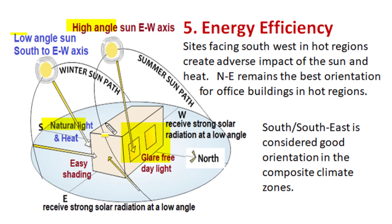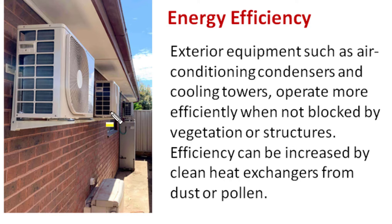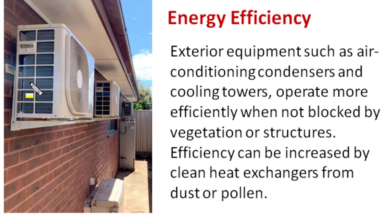A site facing south or west in a hot region creates an adverse impact of sun heat. So in a hot region, building orientation in the northeast direction is preferred. South or southeast orientation is considered good for a composite climate zone. Both east and west faces receive strong solar radiation at a low angle — the eastern face in morning hours and the western face in evening hours. Energy efficiency in building operation also depends upon the positioning of exterior equipment such as condensers of air conditioners or cooling towers. These outdoor units operate more efficiently when they are not blocked by any structure or vegetation, and we can increase their energy efficiency by proper cleaning of their heat exchangers.